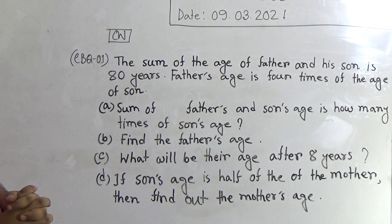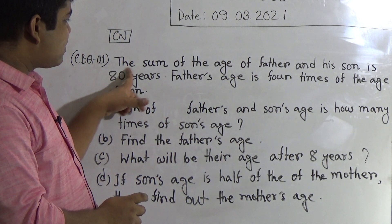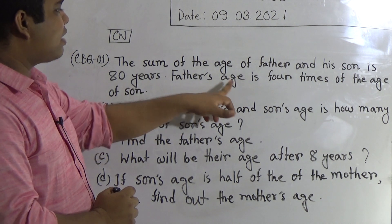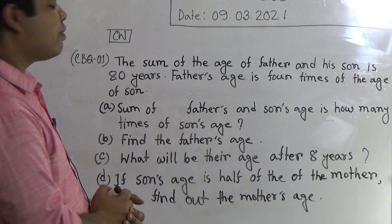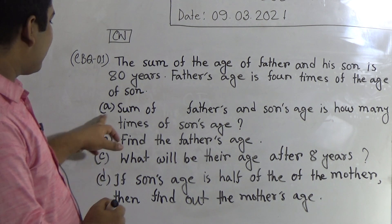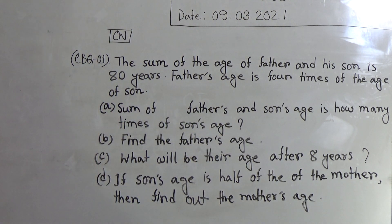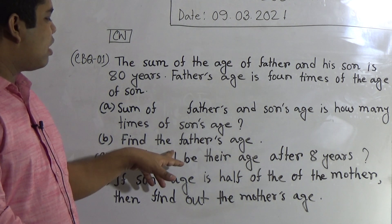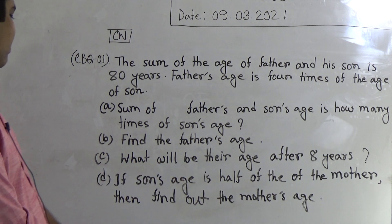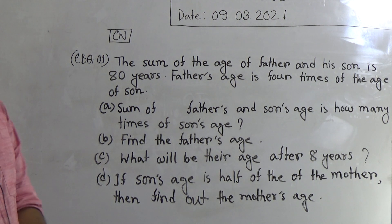In order to solve this math, we first need to read the whole question. The sum of the age of father and his son is 80 years. Father's age is 4 times the age of the son. Using this information, we shall solve questions A, B, C, and D. Question A: the sum of father's and son's age is how many times the son's age? Question B: find the father's age. Question C: what will be their age after 8 years? Question D: if son's age is half of the mother's age, then find out the mother's age.